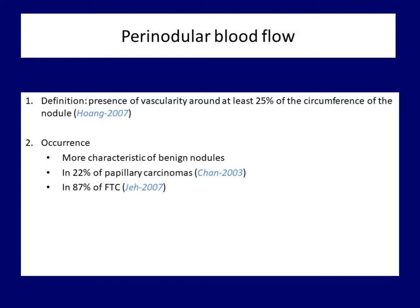The cause for this is that in a great proportion of cases, perinodular blood flow and halo sign show the same feature. The former detects the vessels in the capsule while the latter projects the capsule itself. Similarly to the halo sign, perinodular blood flow occurs significantly less frequently in papillary than in follicular cancer. The high occurrence of perinodular vascularity in follicular cancer is not surprising, because this cancer by definition is surrounded with a capsule.